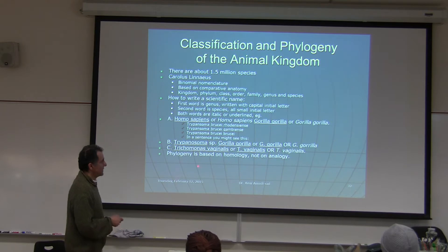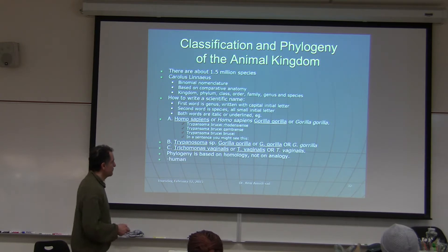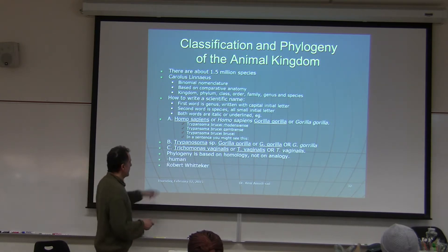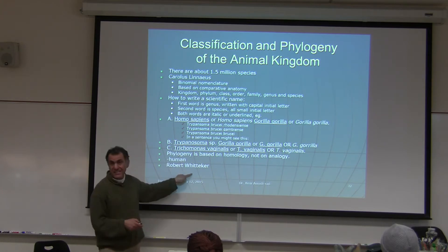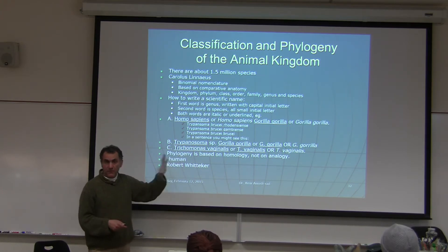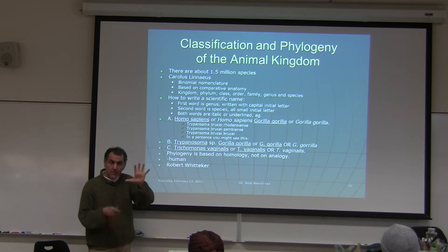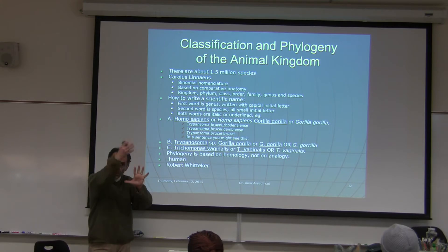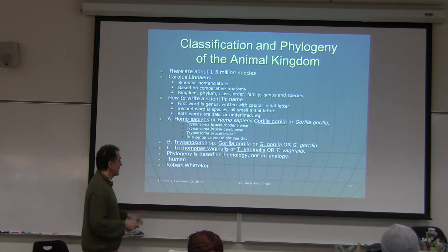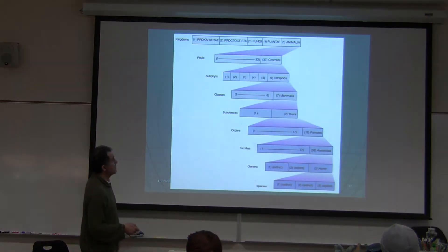Phylogeny is based on homology, not analogy — that's somewhat older information. Robert Whittaker proposed the five kingdom classification and described the evolution of those kingdoms, where they came about, and so on.